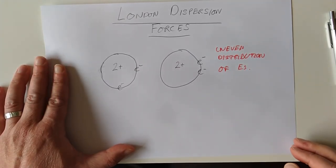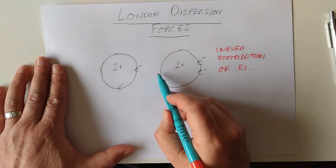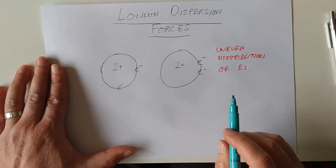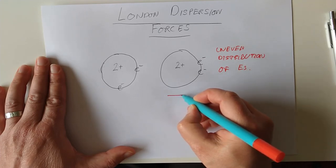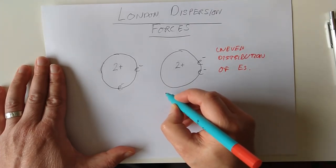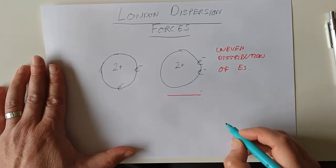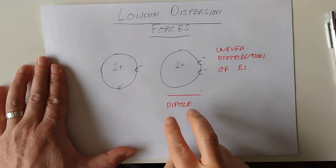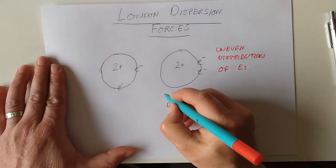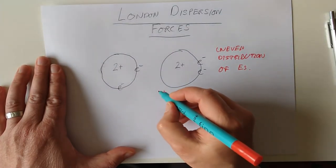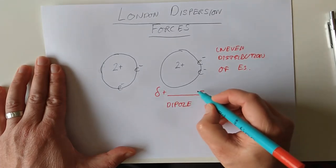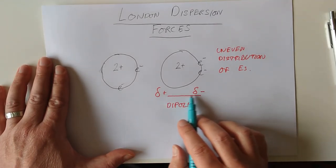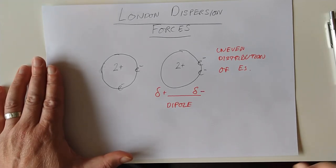Every so often, just by random distribution, we have an uneven distribution of electrons. At this end of the atom you've got no negative charges, and all your negative charges are here. We've turned this single atom of helium into a tiny little bar magnet with a slightly positive charge at one end and slightly negative at the other. This is called a dipole.